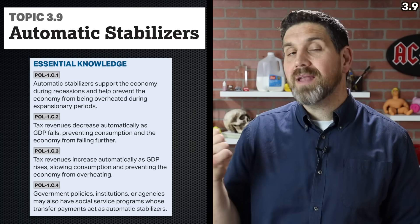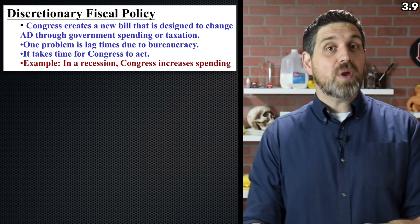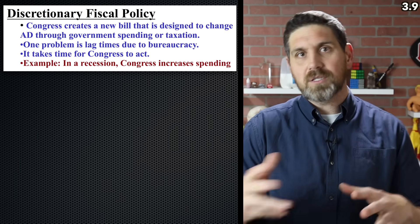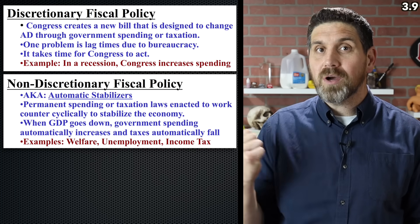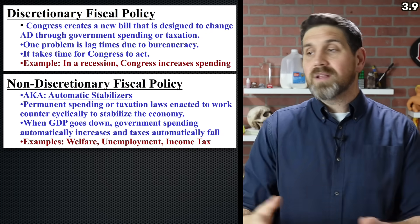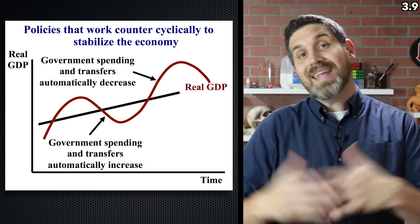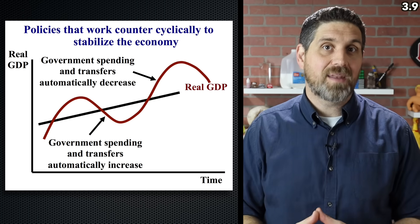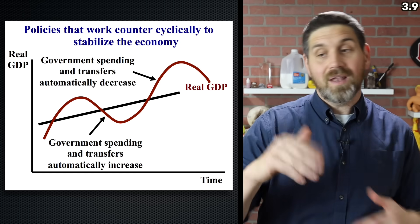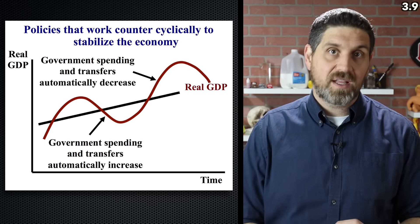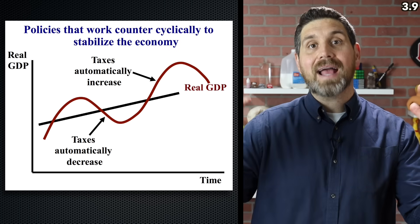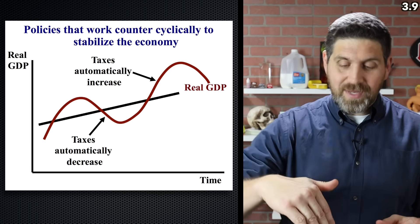Last topic in this unit — topic 3.9, automatic stabilizers. In topic 3.8 we talked about discretionary fiscal policy: new laws designed to speed up or slow down the economy. Here we're talking about laws already on the books — the automatic stabilizers, or non-discretionary fiscal policy. There are two examples you need to know. The first is unemployment and welfare — if the economy starts to go down, people will need that, which increases transfer payments and government spending automatically without a new law. If the economy goes up, there will be less welfare and unemployment, decreasing government spending and transfers. The second example is the progressive income tax system with tax brackets.